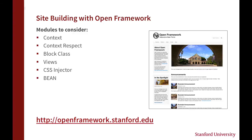Context Respect is a module that lets you use both context and the normal blocks configuration system — if someone edits in both places, Context Respect respects both, giving preference to the block system. Block Class lets you stick a custom class on a block. Views lets you create cool micro layouts in your blocks. CSS Injector lets you override some styles. And Bean — coming to Stanford Sites very soon — lets you do fieldable blocks, so you can have custom block types, like a block with five fields for different social media links.